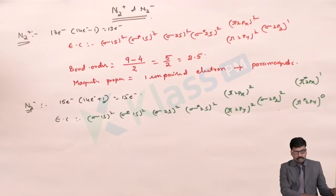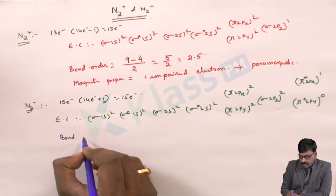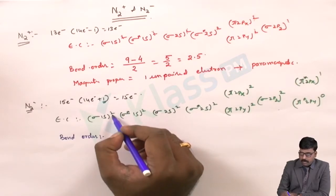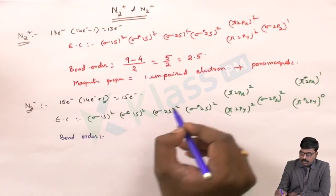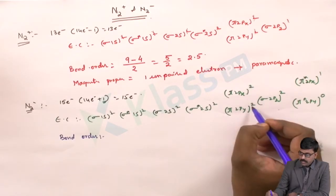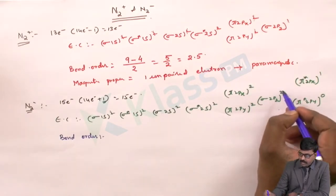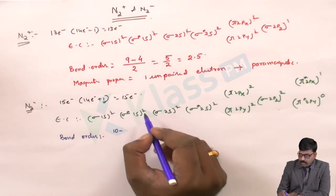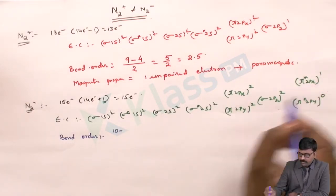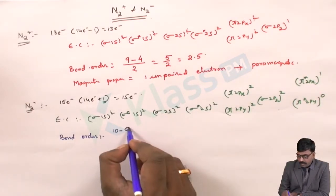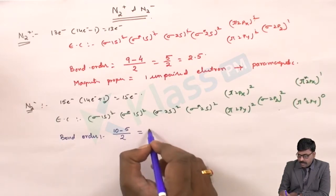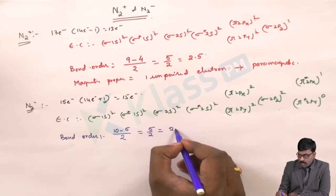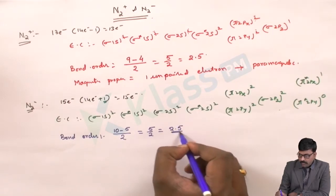Now for the bond order of N2 minus: counting the bonding molecular orbital electrons gives 10, and the antibonding electrons give 5. So the bond order is (10 minus 5) divided by 2, which is 5 by 2 — again 2.5. N2 minus also has a bond order of 2.5.